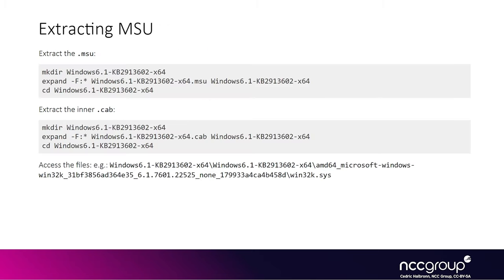You can extract the MSU file using the expand tool, and you'll end up with a few files. The main one is a CAB file, which is almost the size of the original MSU. You can then extract the CAB file again with expand, and you end up with the list of all the binaries that are part of that update, such as .dll, .exe, or .sys files.